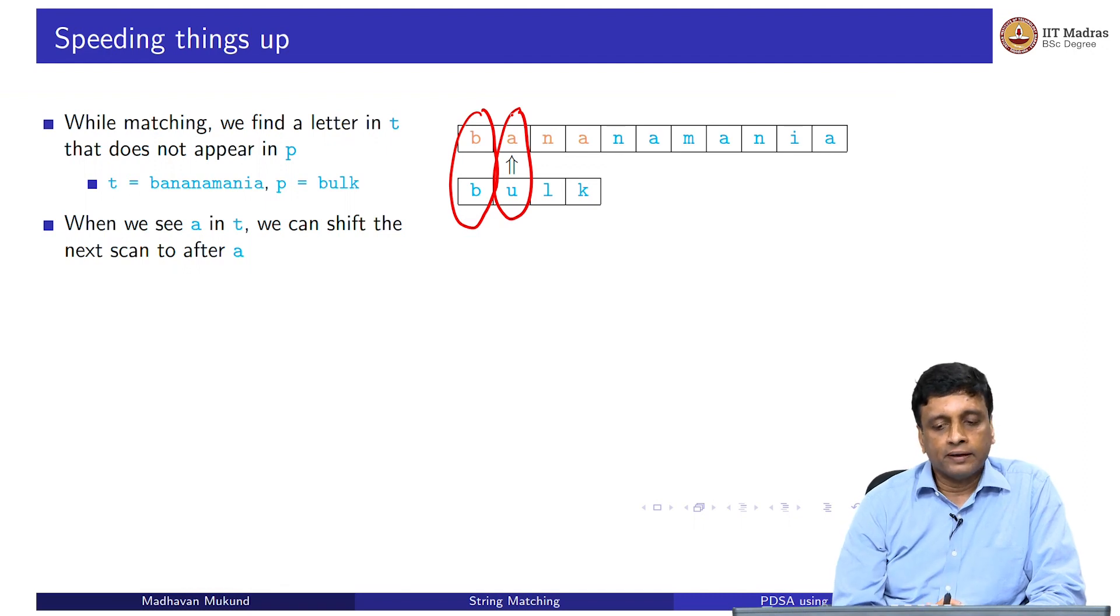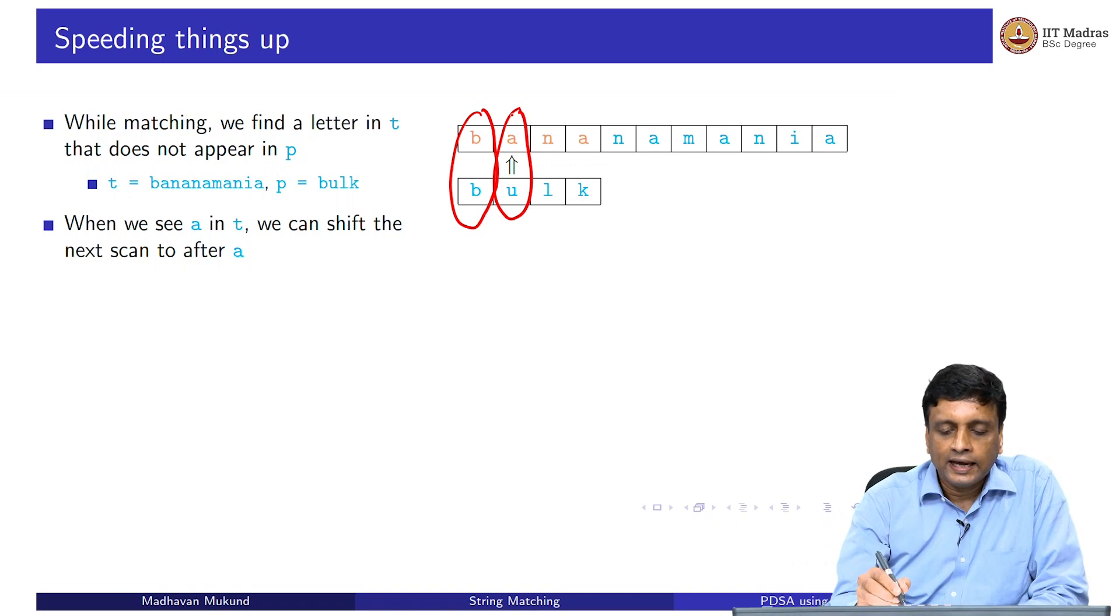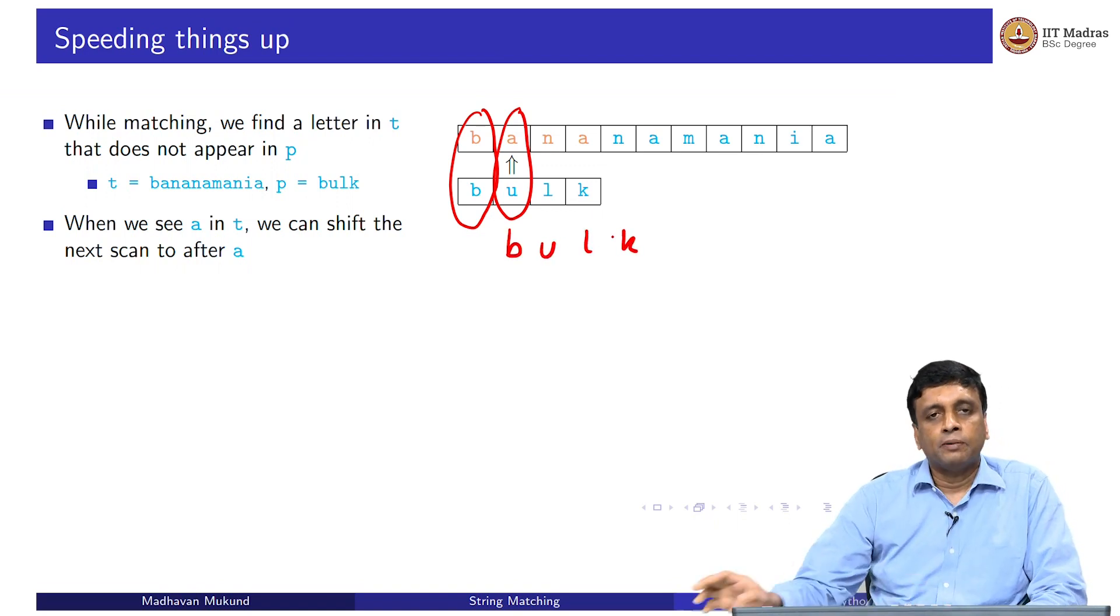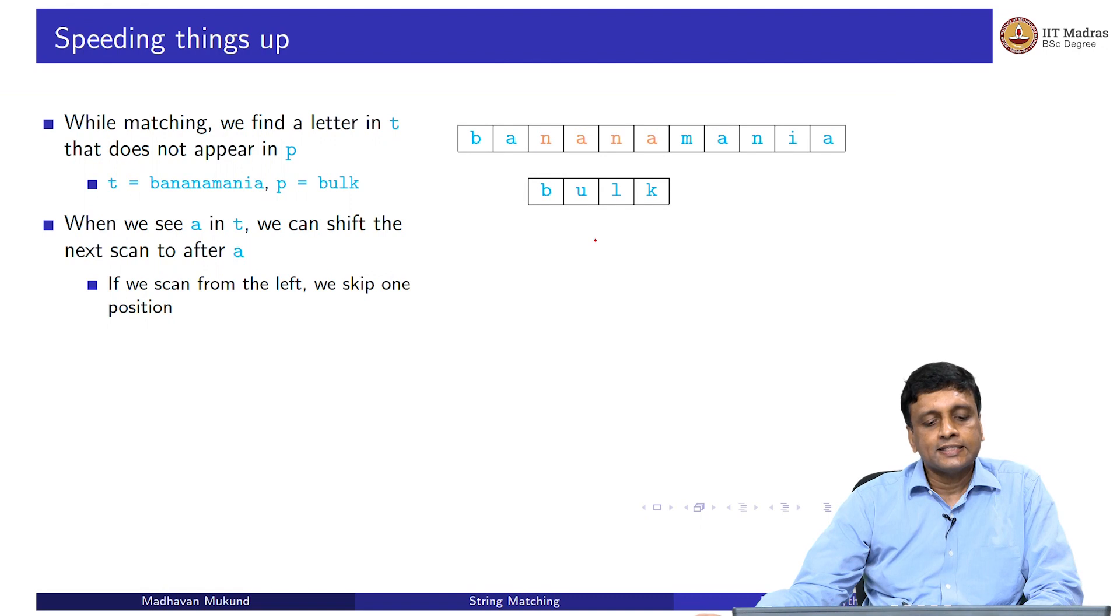A does not appear anywhere in my pattern. There is no way that bulk can overlap with that position where A is, because there is no letter in my pattern which can match the A. What we can do is in this situation, we can skip the next scan. The next scan would have been to start bulk from the position A, but we already know that the position A is useless. We can take our pattern and go past it. We can directly skip one position and go and start at the third position.